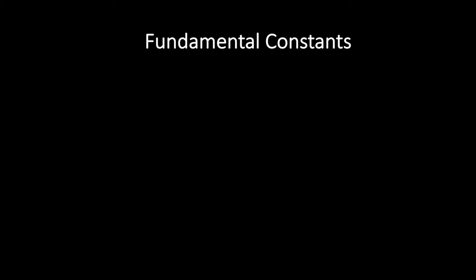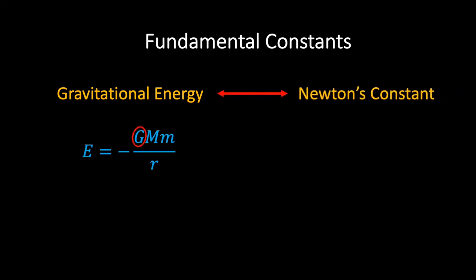Firstly, consider the gravitational potential energy that exists due to the relative position of two or more masses. If two masses are separated by a distance r, then the gravitational potential energy can be calculated using the equation E equals minus G times big M times little m over r, where G is Newton's gravitational constant.